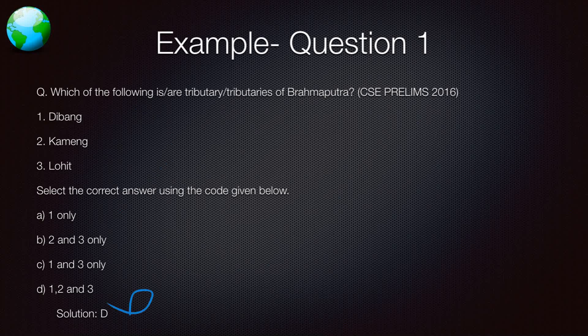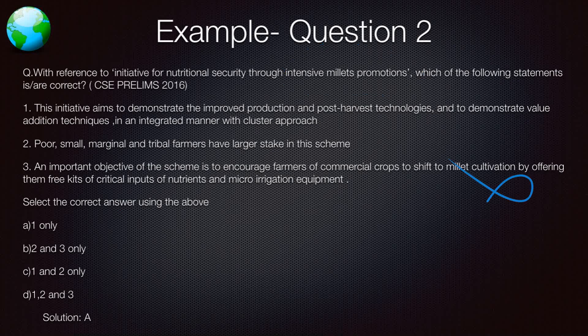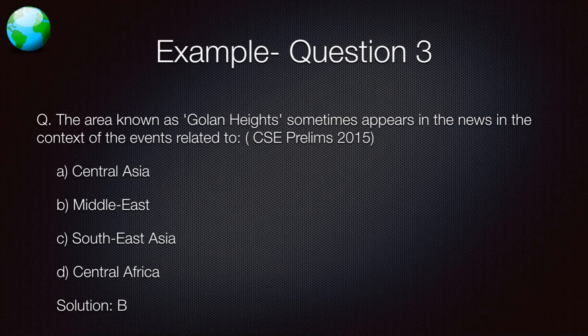The specific answer is not important here — focus on the type of questions asked. Another question refers to the Initiative for Nutritional Security through Intensive Millet Promotion, asking which statement is correct. This requires you to know about millet production, what millets are, and related agricultural schemes. For instance, it is not true that commercial crops are being entirely shifted to millet production — you need to know such distinctions.